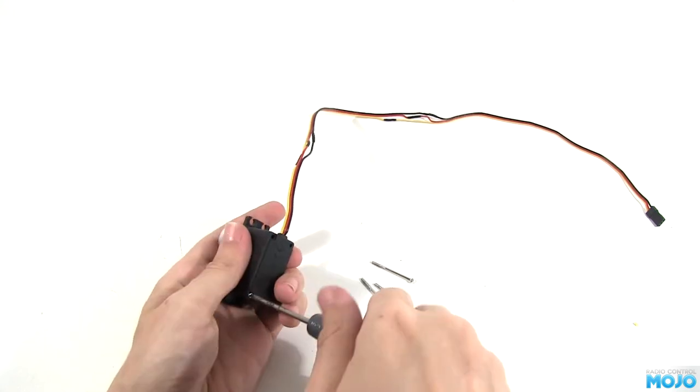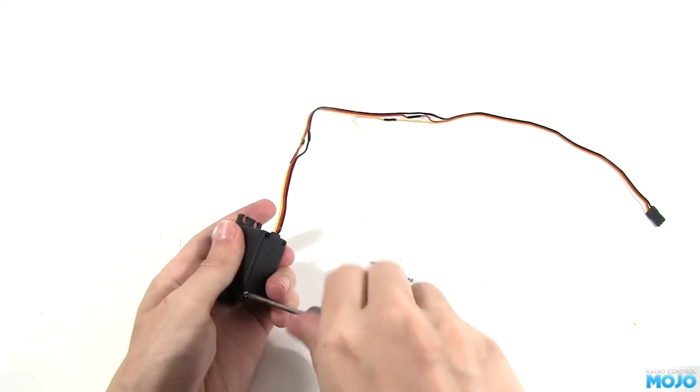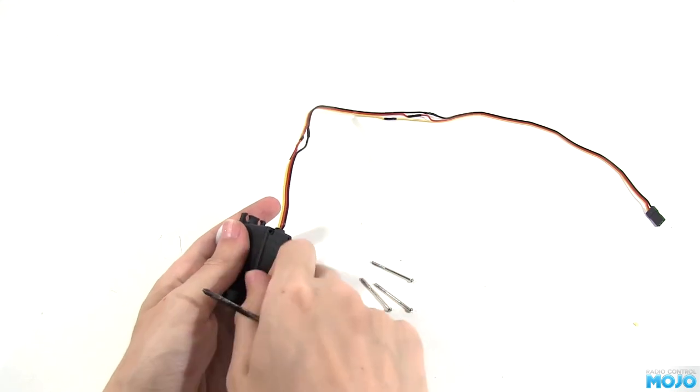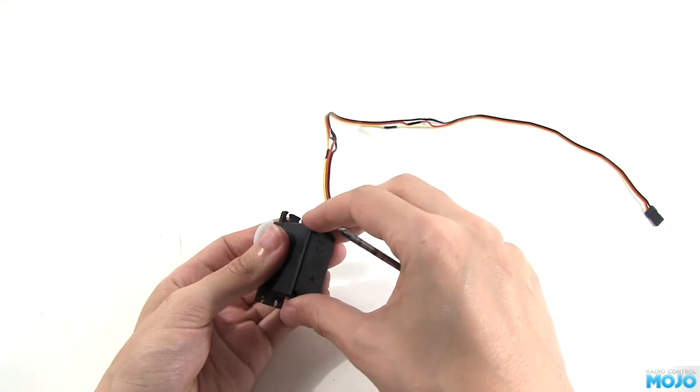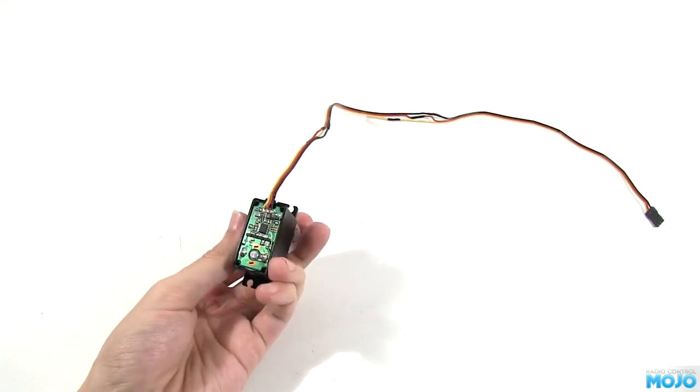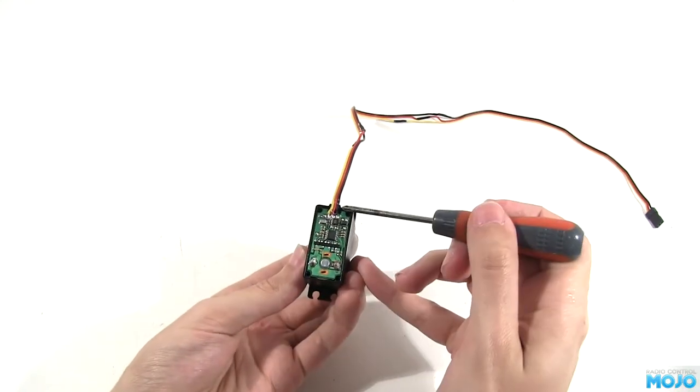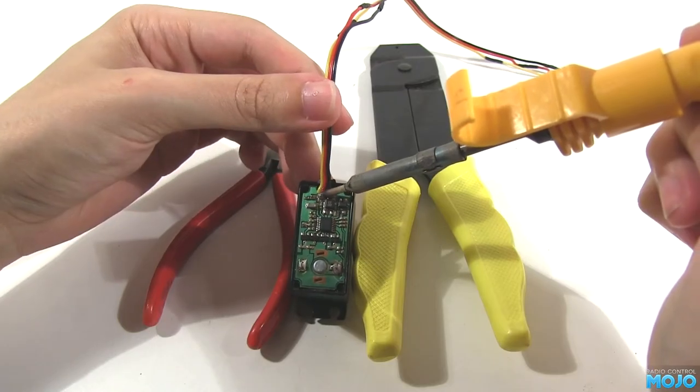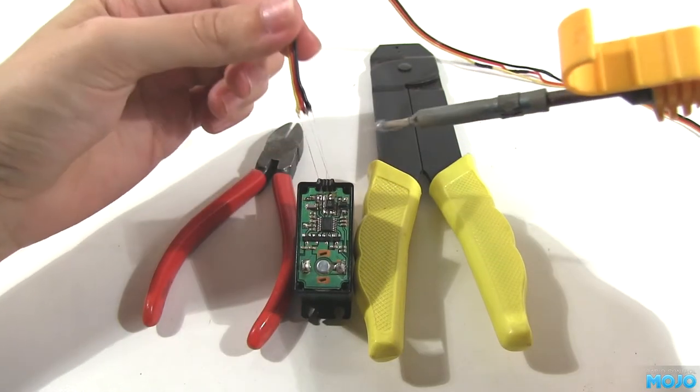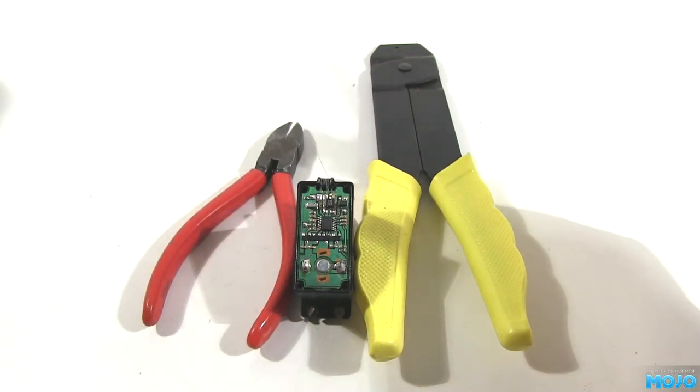Start by taking the bottom off the servo. Now, some servos are a bit different inside, but the basic connection to the outside world is pretty much the same on most servos. First thing we need to do is remove the standard lead from the servo, after making note of which wire goes to which pad on the PCB. Heat up all three wires at once and remove, making sure you don't damage any of the nearby components.